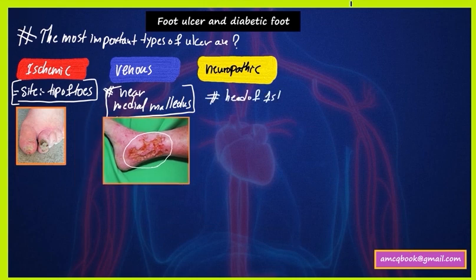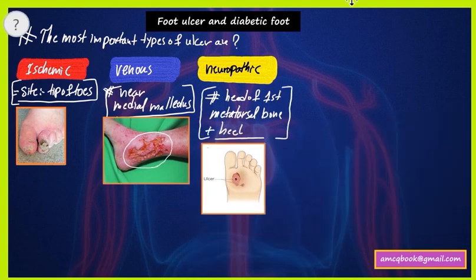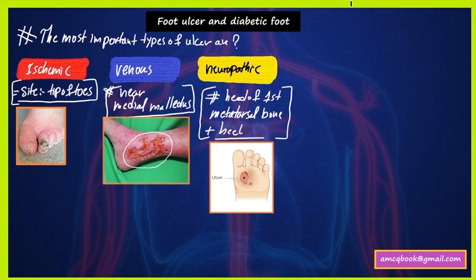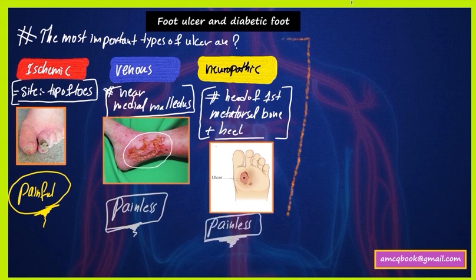Finally, neuropathic ulcer usually involves the head of the first metatarsal bone and also the heel. Regarding pain: ischemic ulcer is painful due to ischemia, while venous ulcer and neuropathic ulcer are both painless. The only painful ulcer is ischemic ulcer.